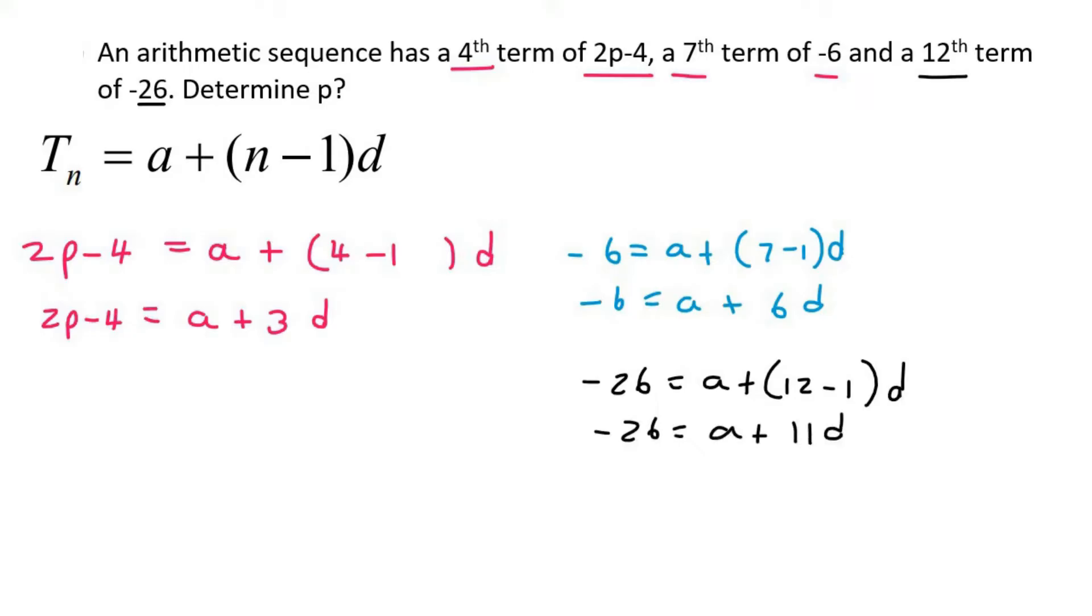So I think what we can do is we use these two, this one and this one, and we solve simultaneously to find a and d. Then we can use the a and the d here to find p. Does that make sense? Awesome.